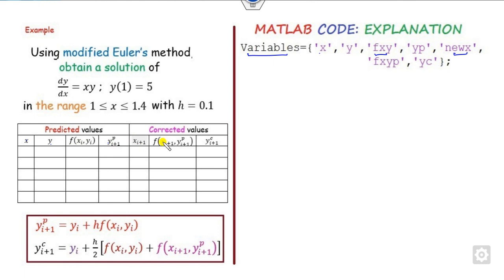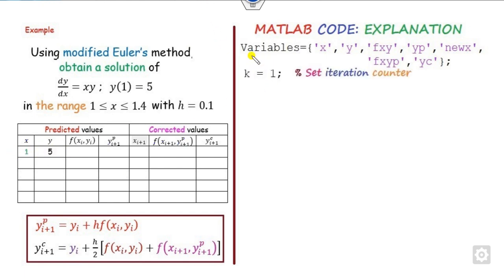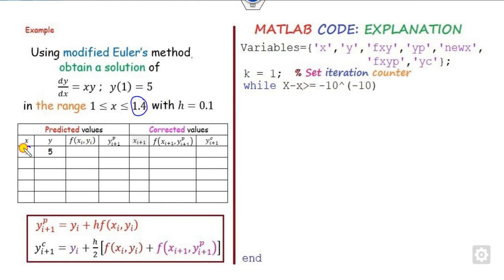Then use the current x and y values. This is the first row — I call it case 1. Start the iteration counter and keep iterating until we reach 1.4. You have to go until your target value: this is capital X stored, and this is the current small x. Whenever the difference satisfies the condition, you continue. You can also write 'greater than or equal to 0', but sometimes that causes a problem.